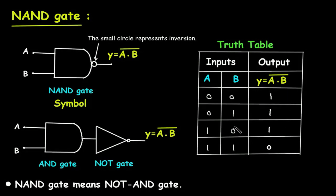This is the truth table for NAND gate. 0×0=0, but its complement is 1. 0×1=0, but its inversion or complement is 1. 1×0=0, but its inversion is 1. Then 1×1=1, but its inversion or complement is 0.